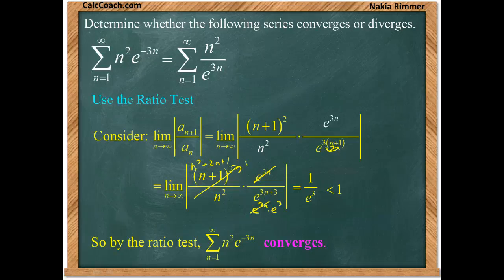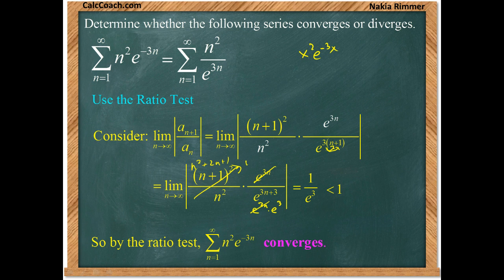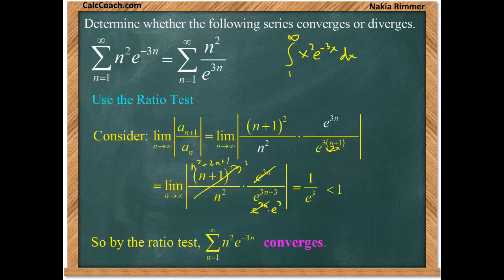You could have also done the integral test. You'd have to integrate by parts, x squared e to the negative 3x. But that's doable because you could actually use the shortcut to execute that integral. So it works as well, and either test is good. I prefer to do the ratio test if I had to choose between those two.